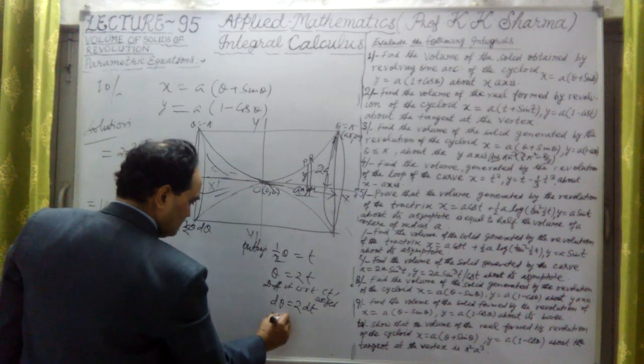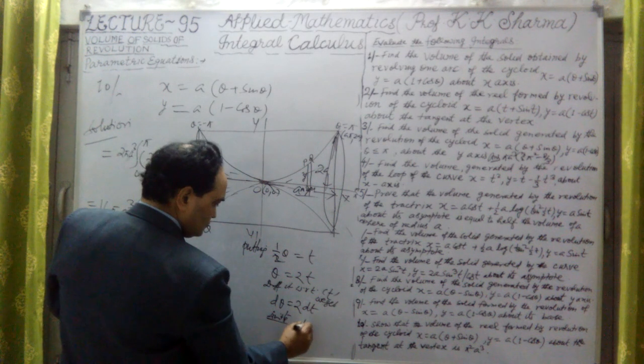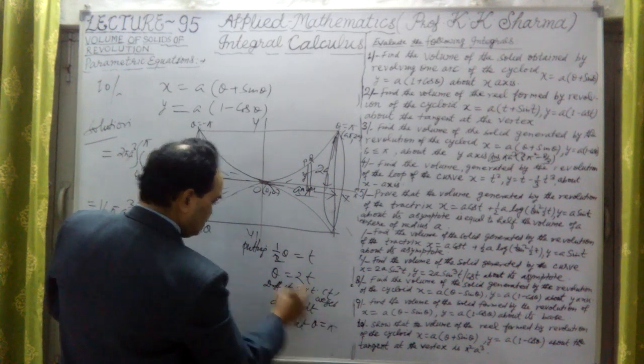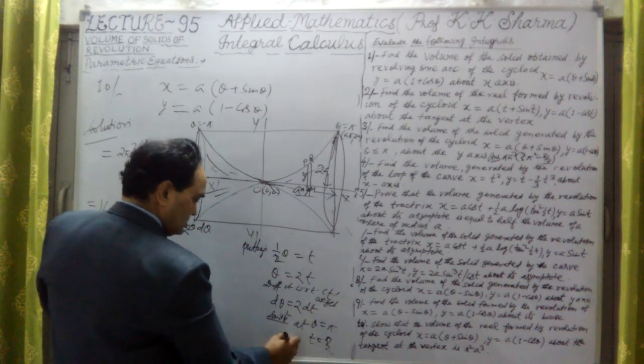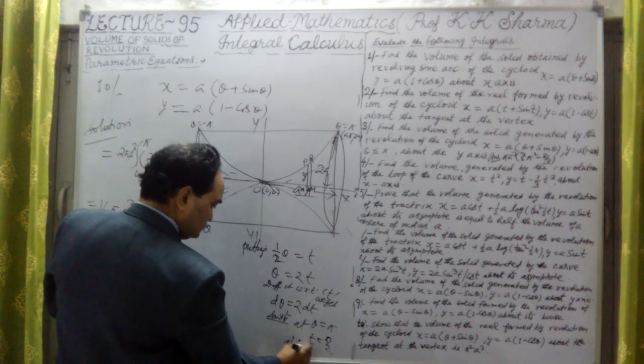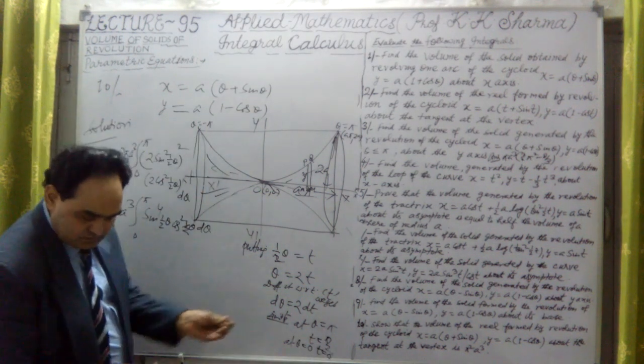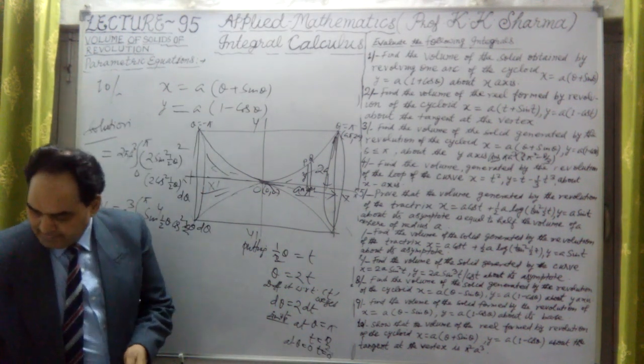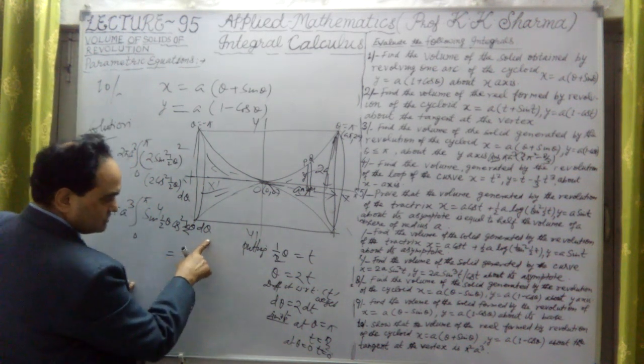What are the limits here? At theta is equal to pi, t equal to pi by 2, and at theta is equal to 0, t equal to 0. So here let me change the marker.